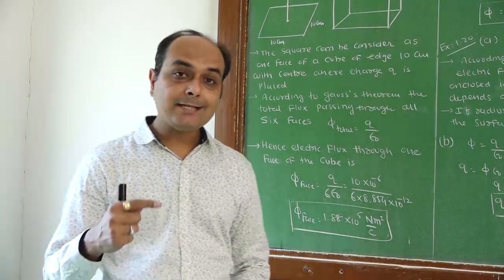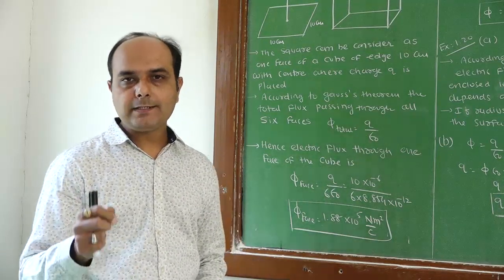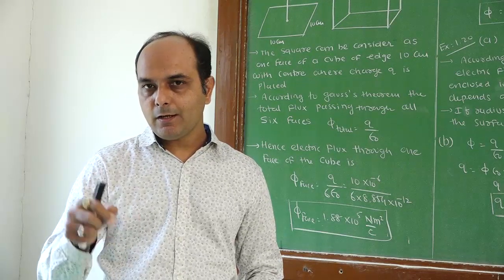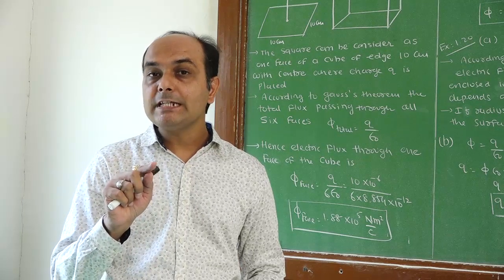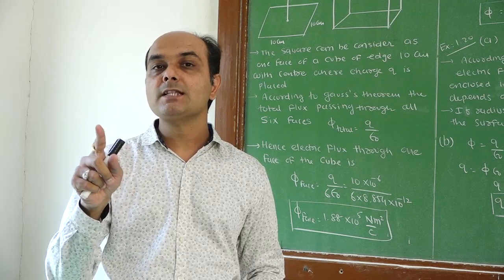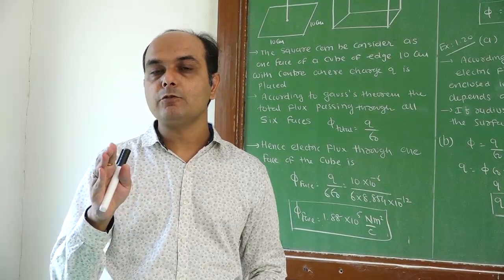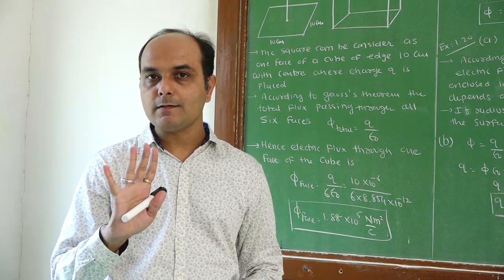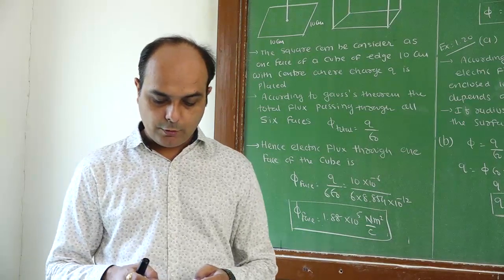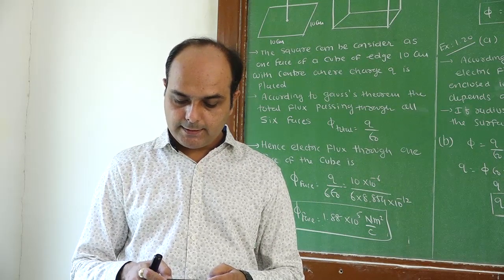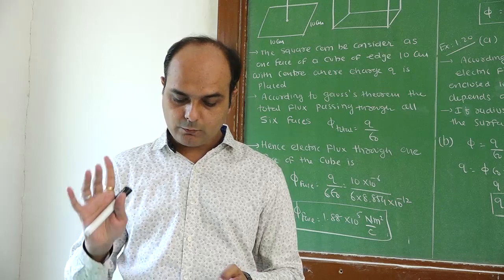Now we are moving on the next example, that is example number 18. About this example number 18, we have already studied in Gauss theorem. A point charge plus 10 microcoulomb is at a distance 5 cm directly above the center of the square of side 10 cm, as shown in the figure.